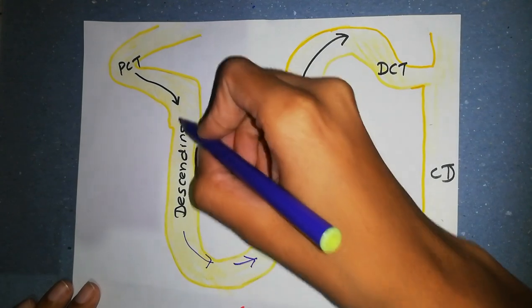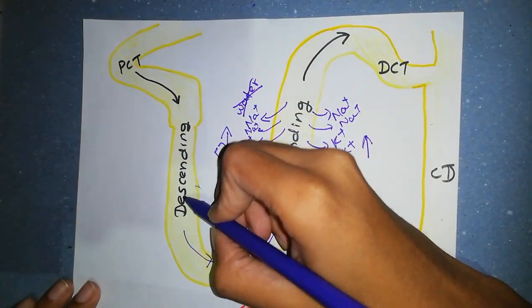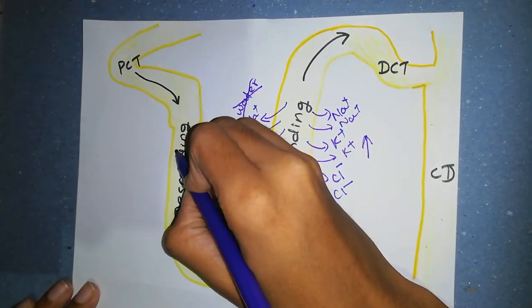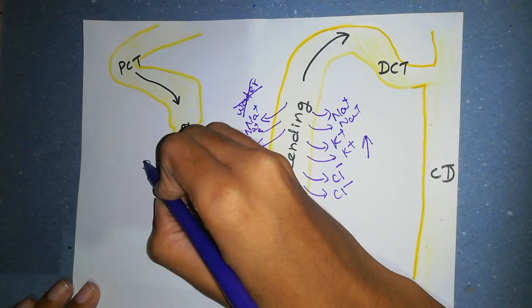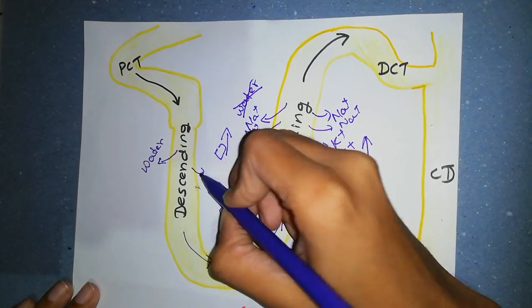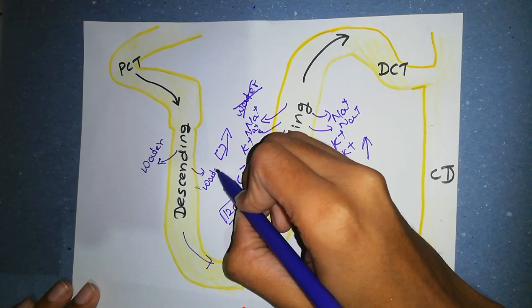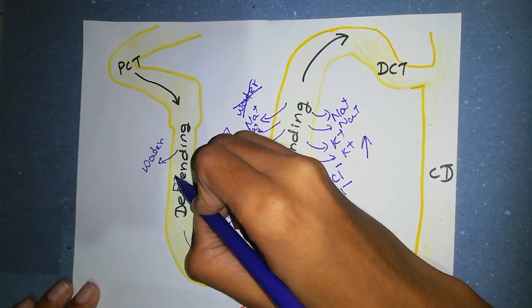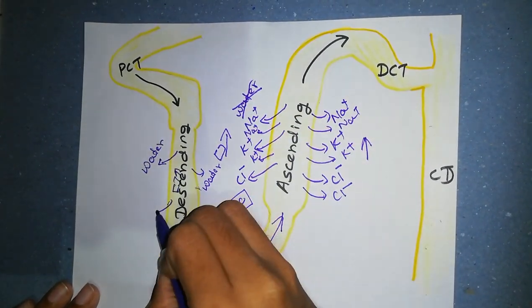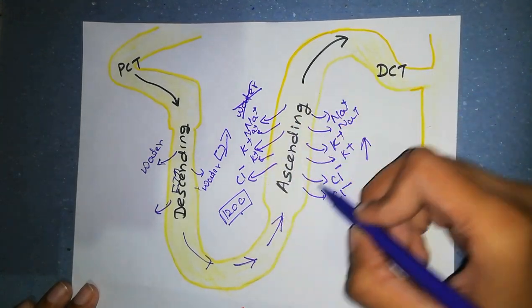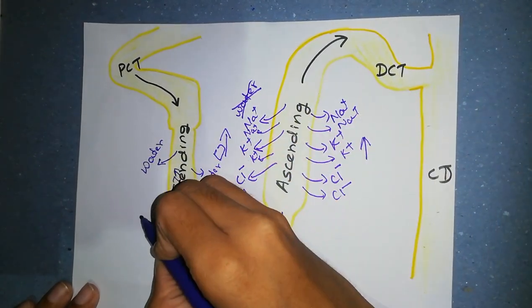The descending limb of loop of Henle has high permeability to water. So it reabsorbs water, making the tubular fluid hyperosmotic, more concentrated. But here, the diffusion of water into medullary interstitium is less than the reabsorption of solutes into medullary interstitium.